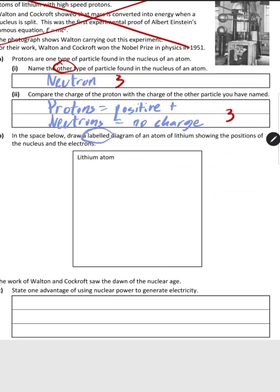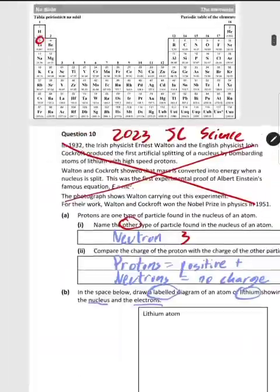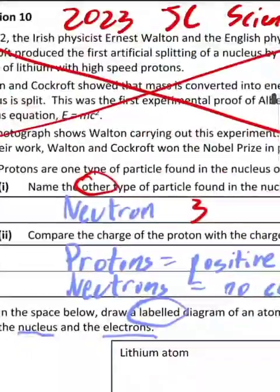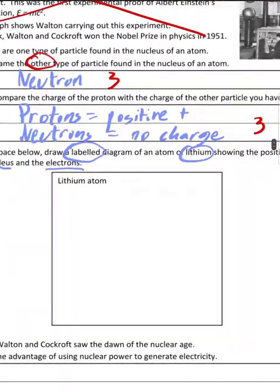Part B: In the space below, draw a labeled diagram of an atom of lithium showing the positions of the nucleus and the electrons. Going to page 79 of our log tables, we see that lithium's atomic number is three. That means it has three protons and hence three electrons. We can configure that in the way 2,1. So how do we draw this?